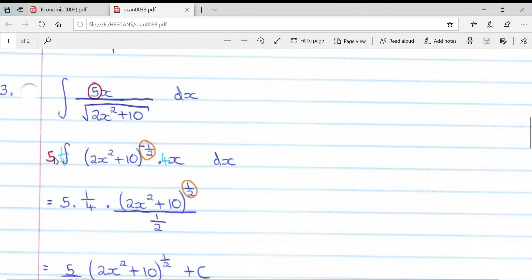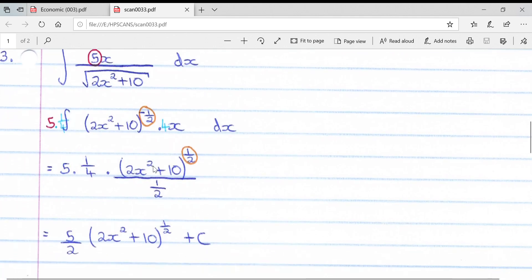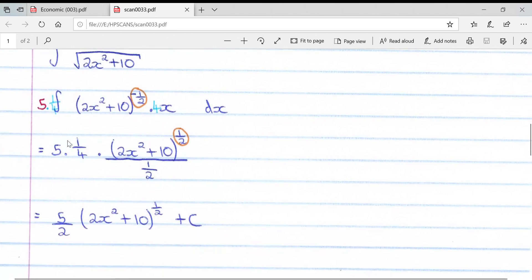You take out that 5 and you're left with your bracket that you've brought up and made to the negative a half, and your x at the top. But the same thing applies: do we have the derivative of the bracket? No, we just have an x, not 4x. So we add in the 4 and compensate outside with 1 over 4, so when multiplied together it doesn't make a difference.